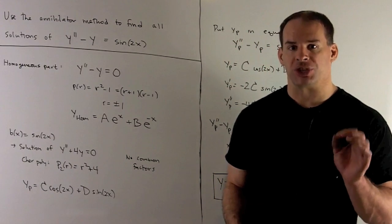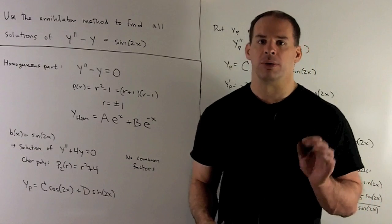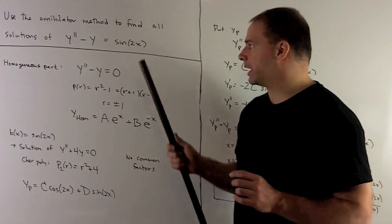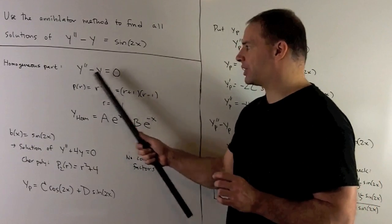Now, how do we proceed? First step, we find the homogeneous part of our general solution. So to do that, we replace sine of 2x with zero, and then we solve.